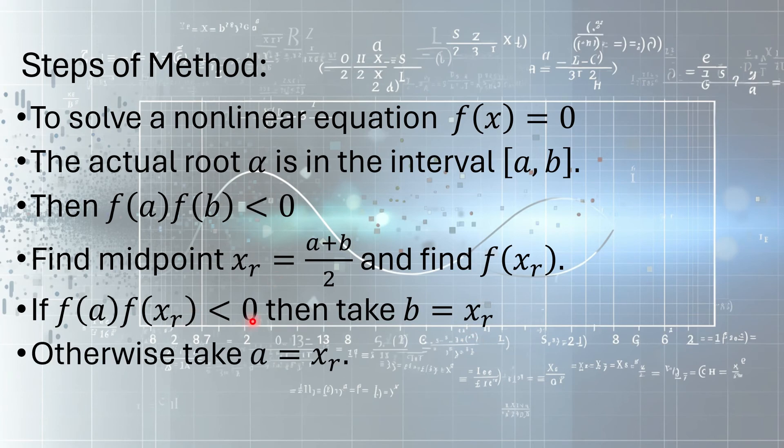Otherwise, if that is not the case, if f(a) and f(xr) have same sign, that means if this is greater than 0, in that case a will be replaced with xr. And then you would repeat this process. One end of this interval will be replaced with xr, depending on the signs of the function values. Let me explain this with example.